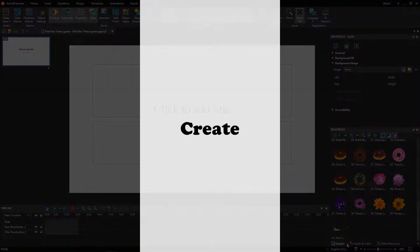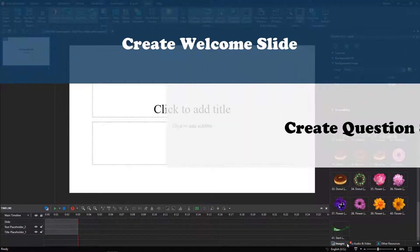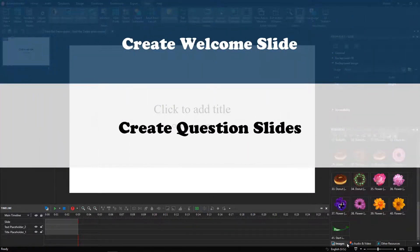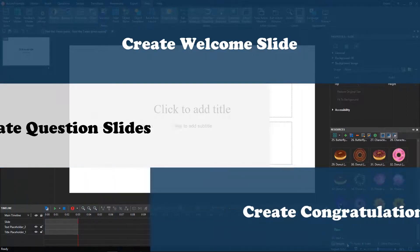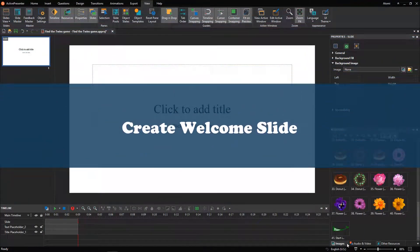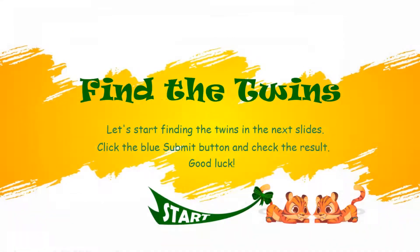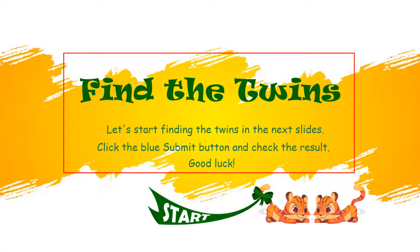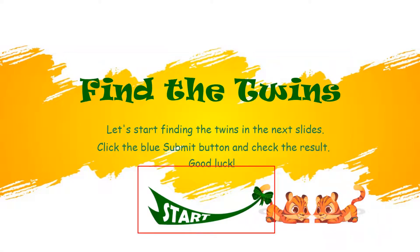It's time to explore the main steps to create this interactive game. First of all, let's learn how to create the welcome slide. In the Find the Twins game, the welcome slide includes a background image, the game's name and description, two lively characters, and an interactive object to navigate to the next slide.